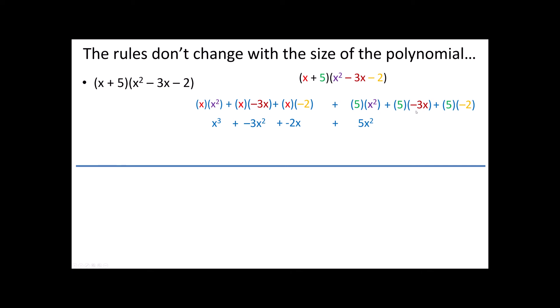5 times negative 3x is negative 15x, and 5 times negative 2 is negative 10. Now, if I were doing this on my own and not in a video, I would probably skip this entire second row and jump straight down to the results, doing the multiplication in my head. Some of you may find that shortcut helpful; others may find that skipping the middle step leads to more computation errors. That's a personal decision — most math teachers won't require that middle step, but for the video it helps to see where our numbers come from.